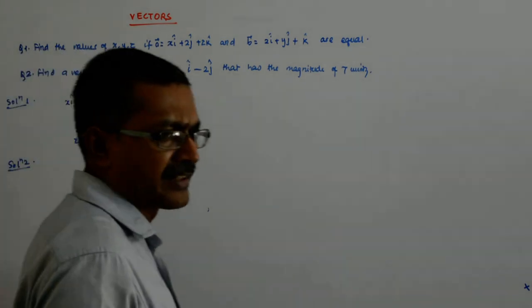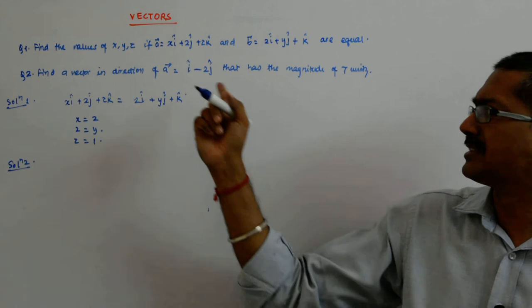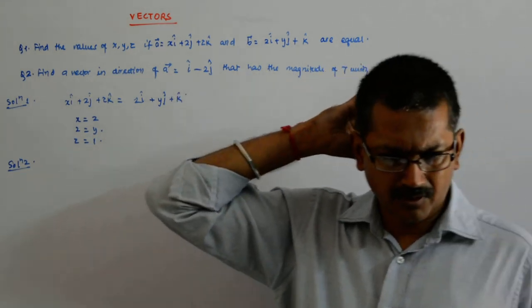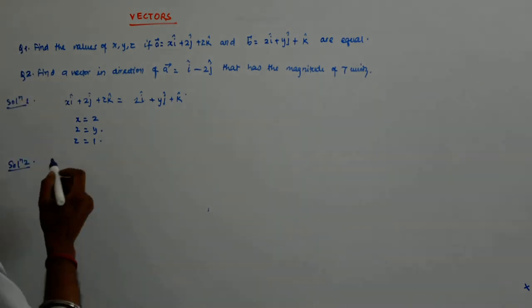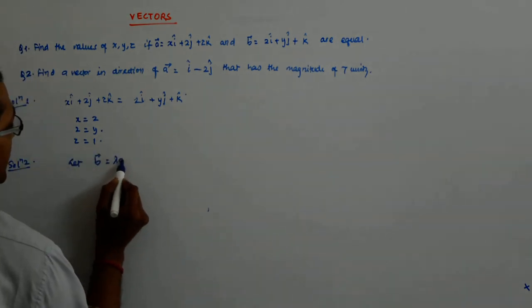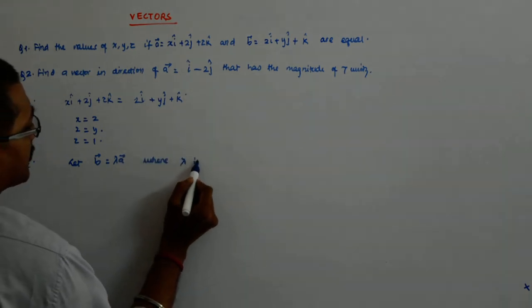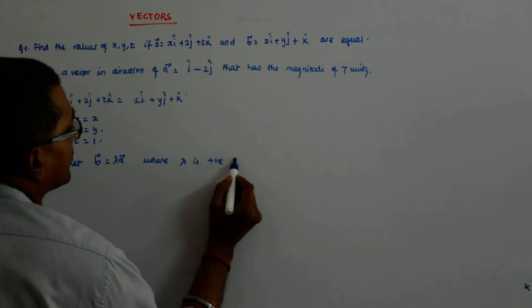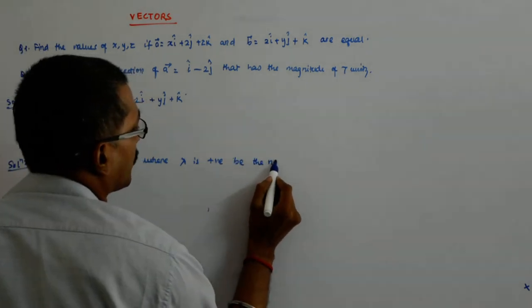We want to find a vector in the direction of the second one. We want to find a vector in the direction of this. Now, how do we find a vector in the direction of this? I have to let B is equal to lambda A where lambda is positive be the new vector.